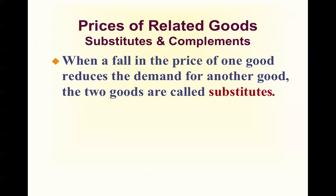Substitutes and complements — this gets a little tricky. When a fall in the price of one good reduces the demand for another good, the two goods are called substitutes. Examples include Coca-Cola and Pepsi, different authors of a book, different movies, or Burger King versus McDonald's. So when the fall in the price of Pepsi reduces the demand for Coca-Cola, Coke and Pepsi are substitutes in the mind of the consumer.